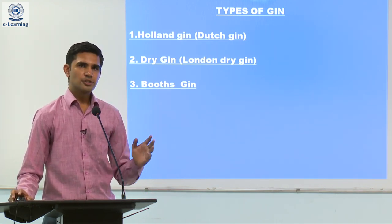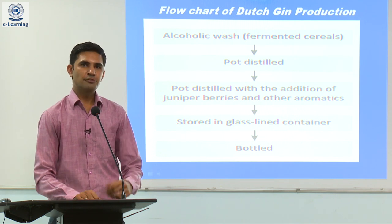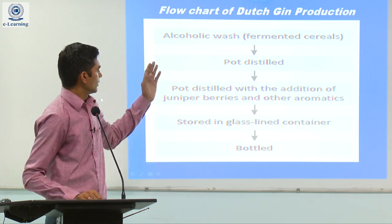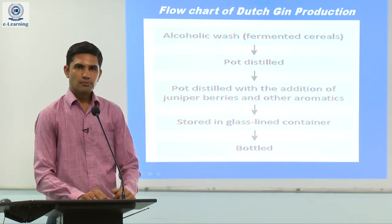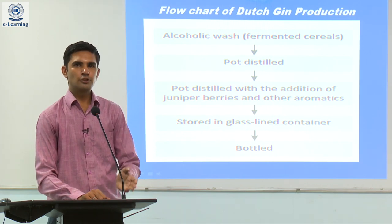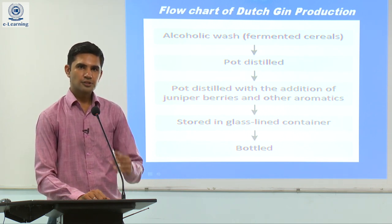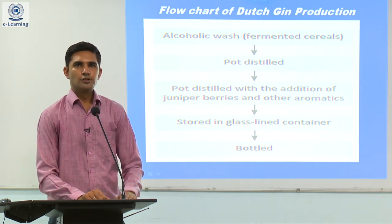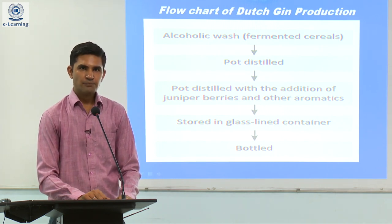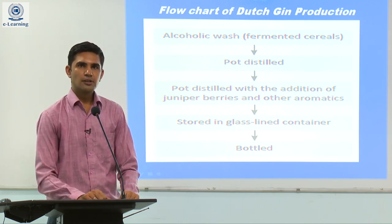Now we learn the manufacturing process of different types of Gin, starting with Dutch Gin. The another name of Dutch Gin is Holland Gin. We take an alcoholic wash made from fermented cereals and do the distillation process in the pot still method. After the first distillation is complete, we proceed to the second distillation, also using the pot still method. At the second distillation, we add juniper berries for flavour, and you can also add other flavourings such as coriander seeds, cardamom, fennel, etc.